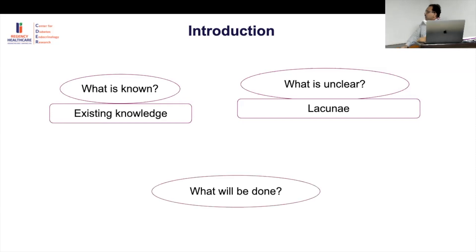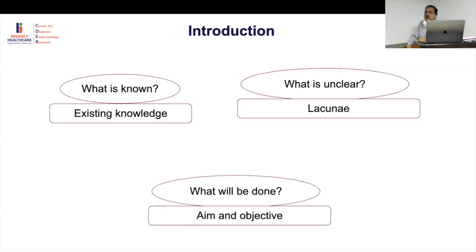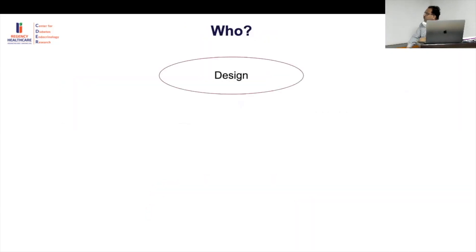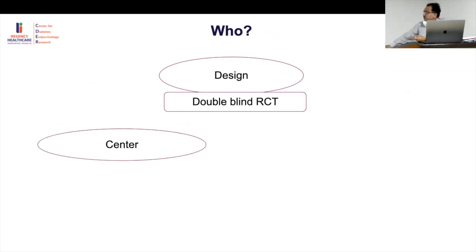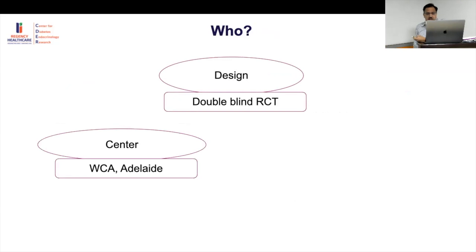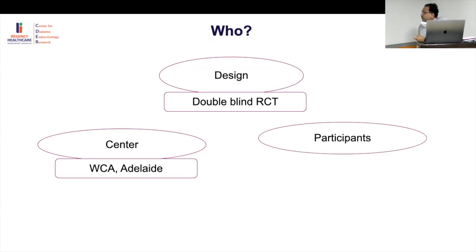Aims and objectives must be clearly stated. The study design here is a double-blind randomized controlled trial — considered the highest level of evidence. They used two specific centers in India and Western Australia. Whether those centers and patient populations match your own clinical setting is an important question when assessing generalizability.